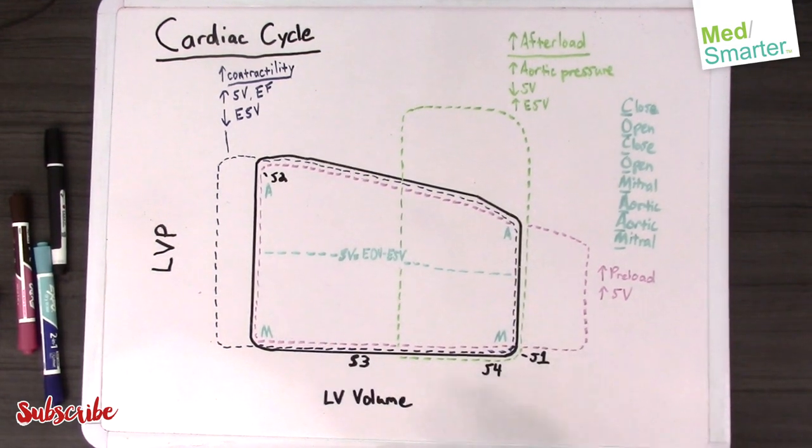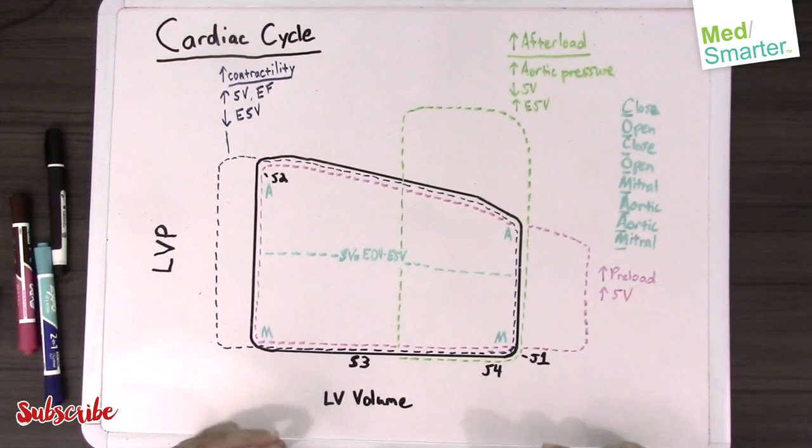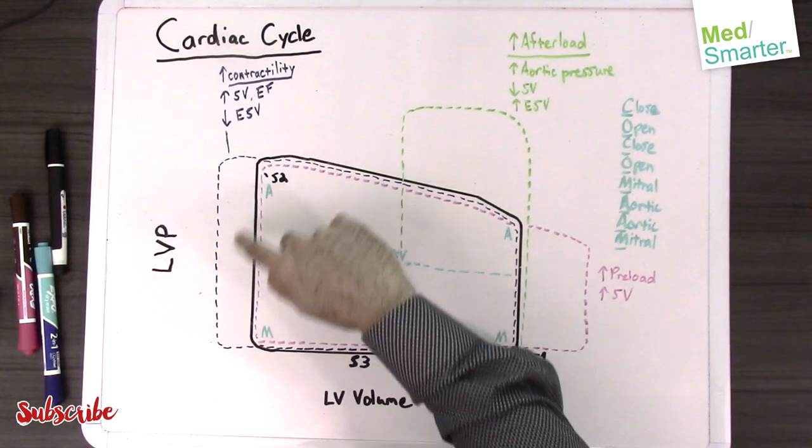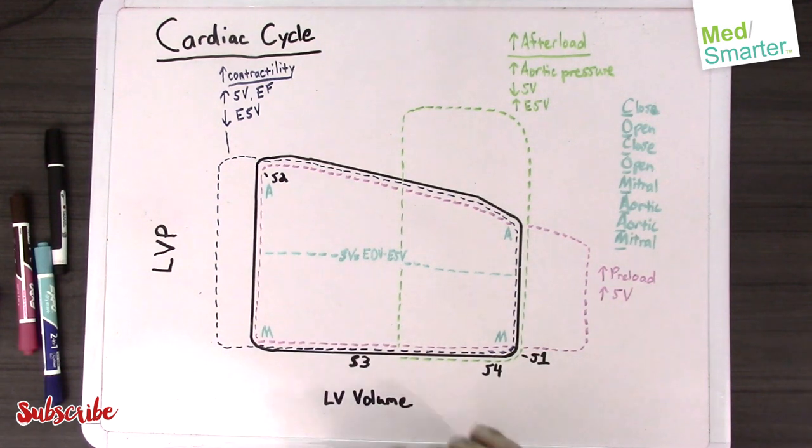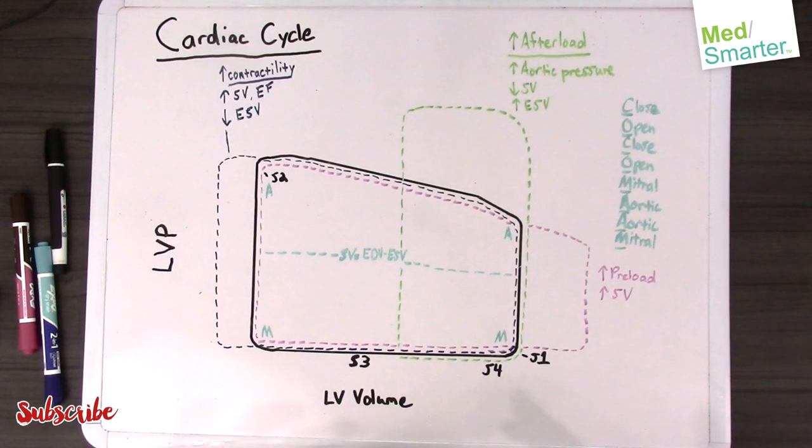That's how your heart should be functioning normally, indicated by this black square. The black square is how your heart should be functioning in a normal scenario - not exercising, not with hypertensive patients, and not fluid overloaded patients. But the Step One exam definitely wants you to know also what happens in these other scenarios.